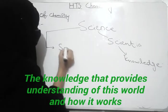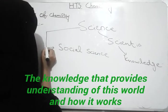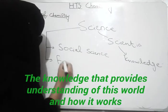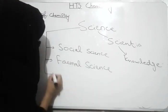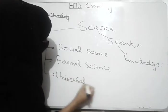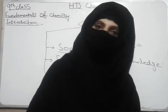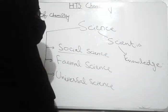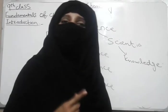The first type is social science, the second one is formal science, and the third one is universal science. In social science, we study about people and society. In formal science, we study about logic and math. And in universal science, we study physics, biology, and chemistry.